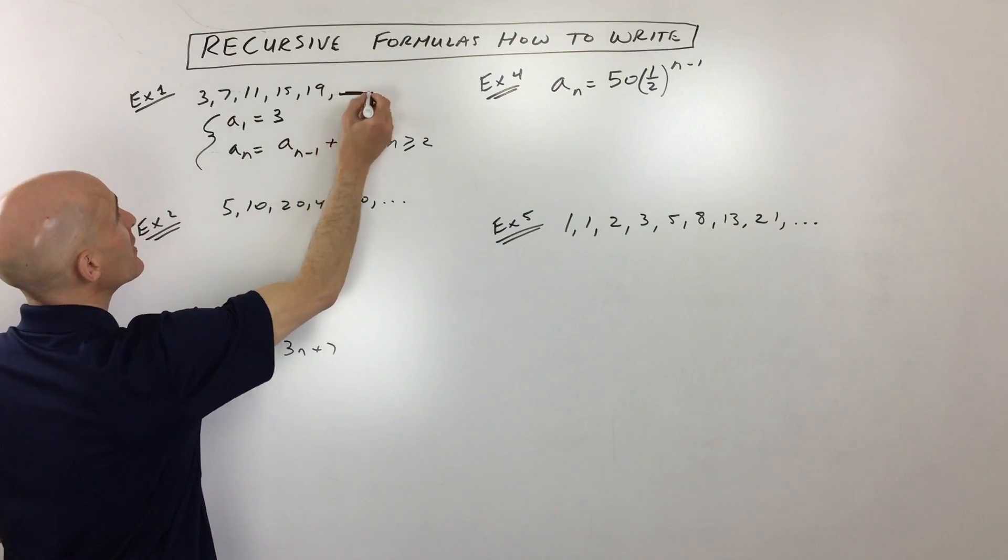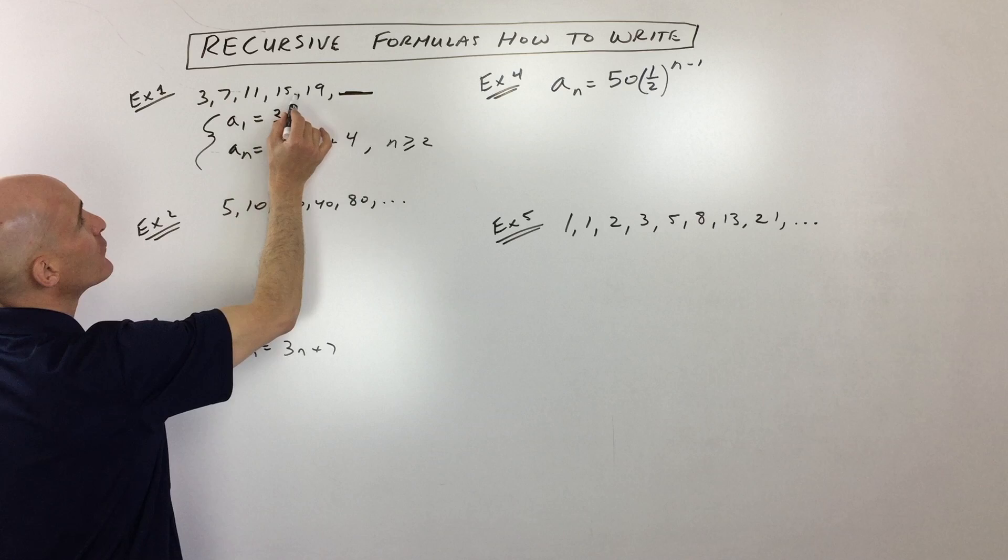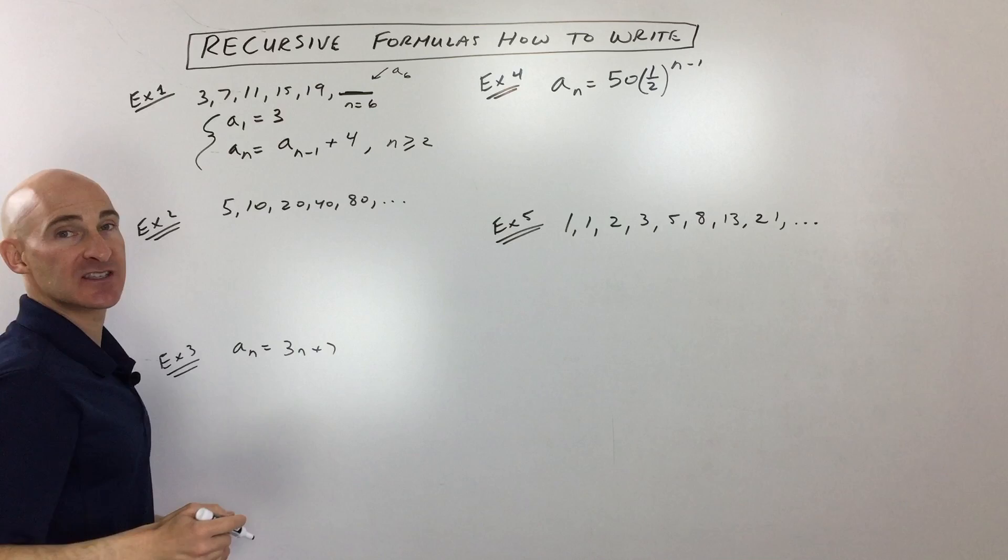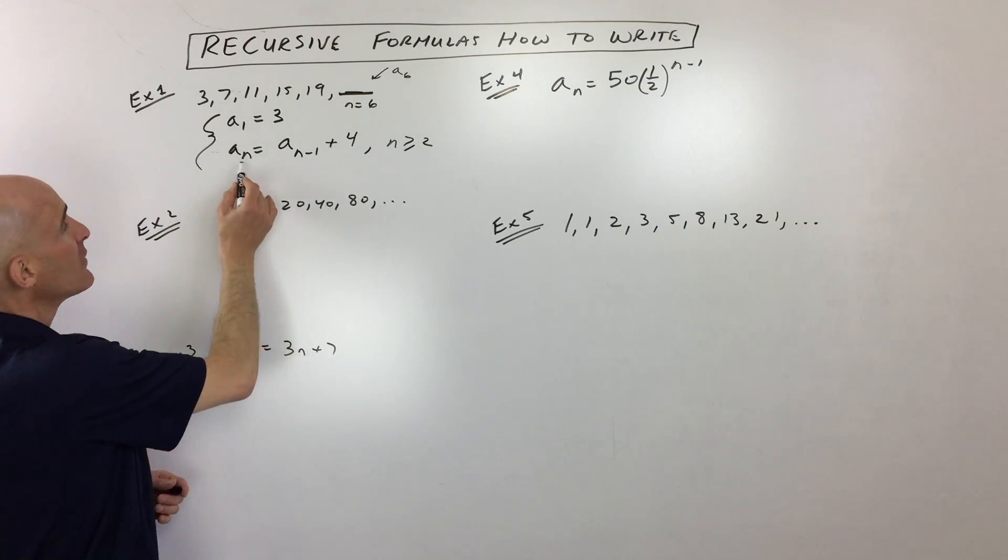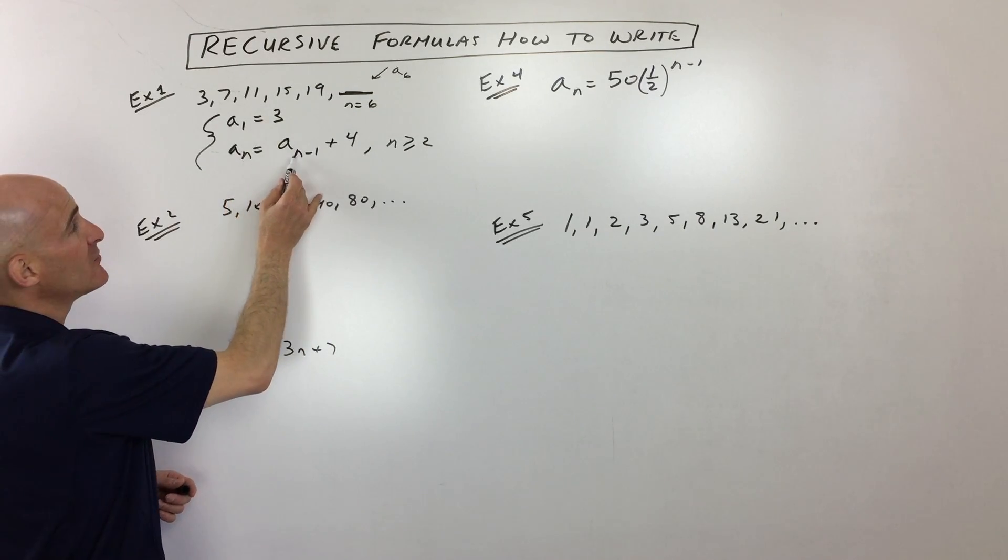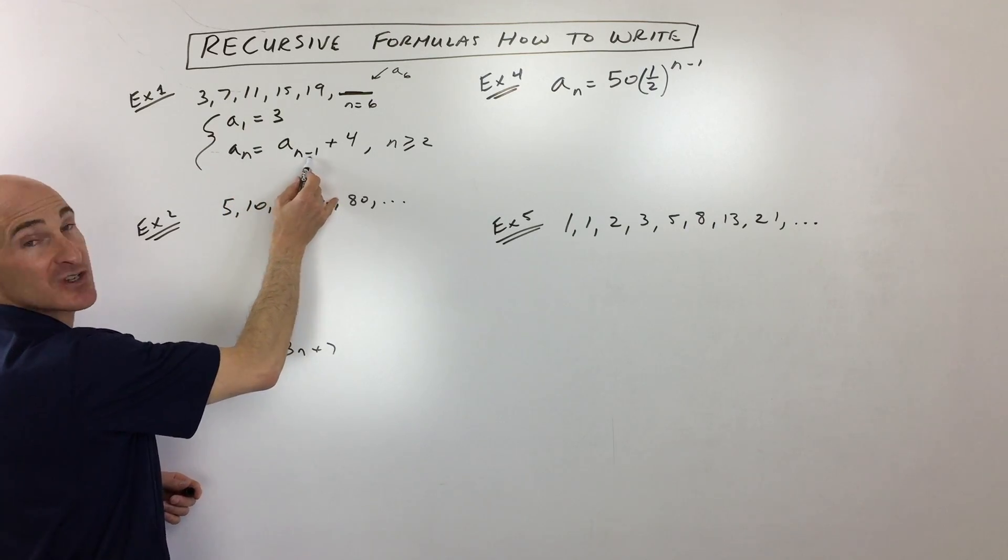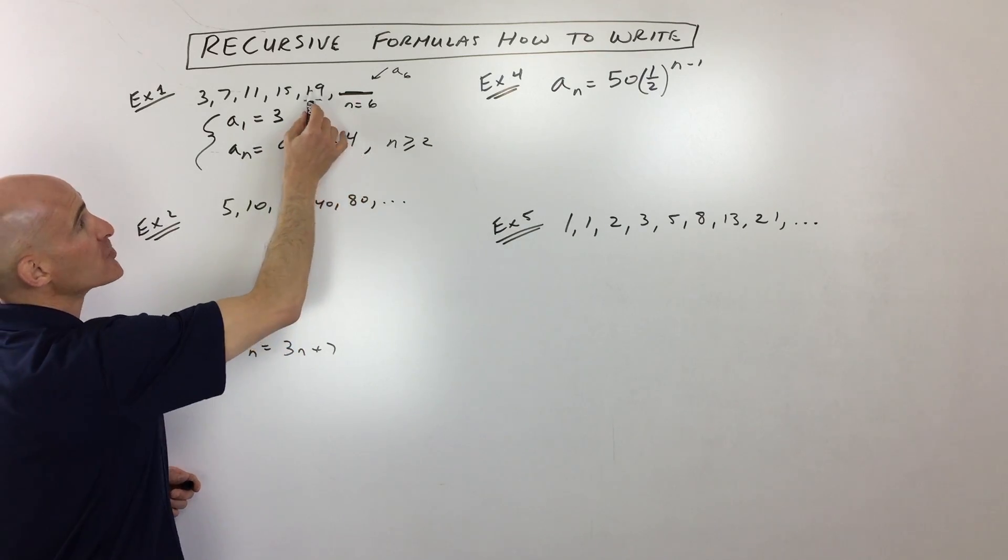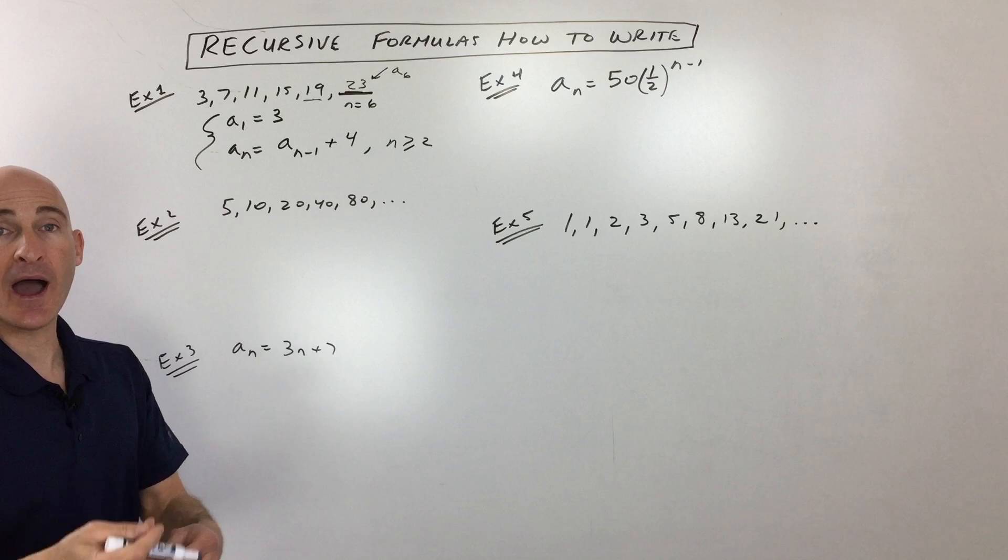So for example, if we wanted to find this term, which is 1, 2, 3, 4, 5, 6, n equals 6, right? We want to find the value of that term, that a sub 6 is the value of that term. If you put 6 in for n, you've got the value of a sub 6 is a sub 6 minus 1, which is a sub 5, which is this guy, right? Plus 4 more. So 19 plus 4 takes you to 23 and so on.